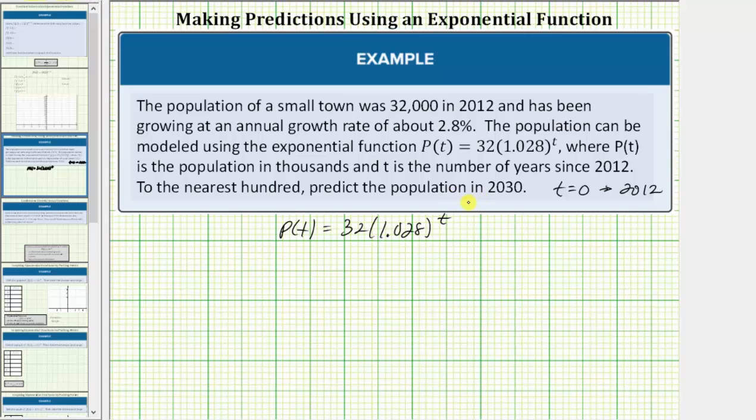Another way to determine the value of t for the year 2030 is to take the desired year 2030, subtract the base year of 2012, which gives us t = 18. So again, t = 18 represents the year 2030.